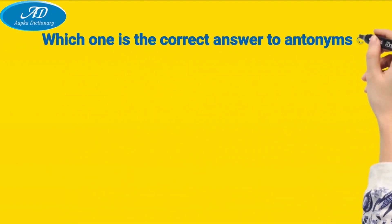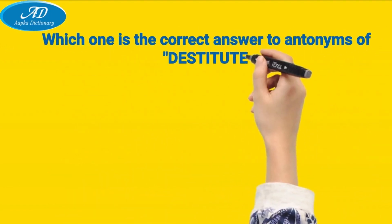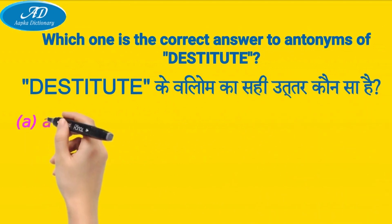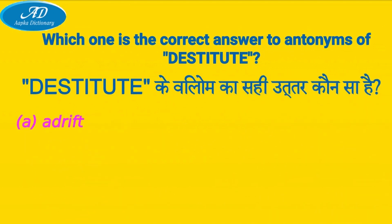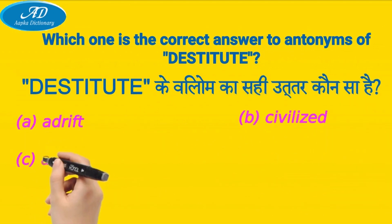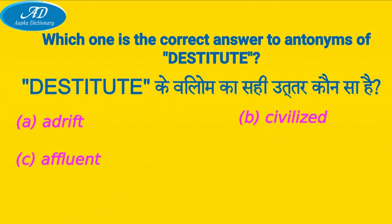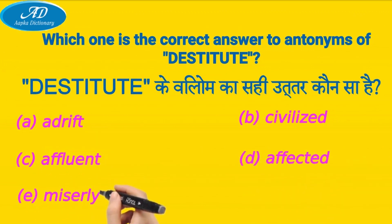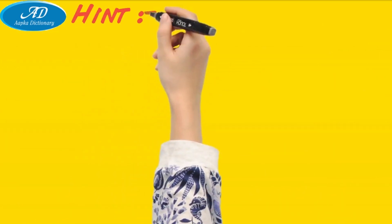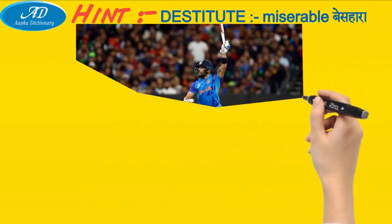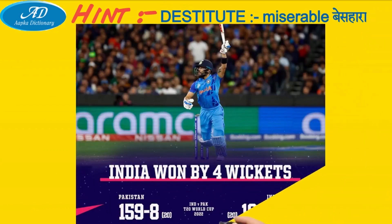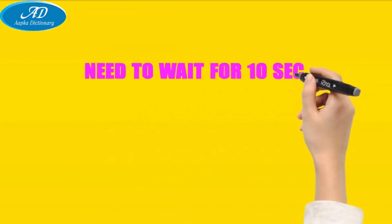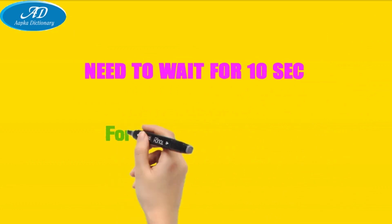Which one is the correct answer to antonyms of ductility? The options are: a) adrift, b) civilized, c) affluent, d) affected, e) miserly. Need to wait 10 seconds for the correct answer.